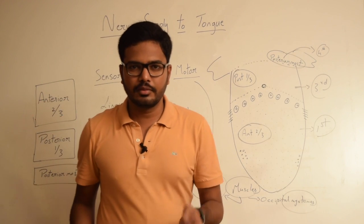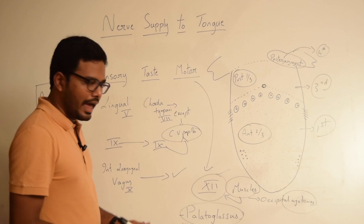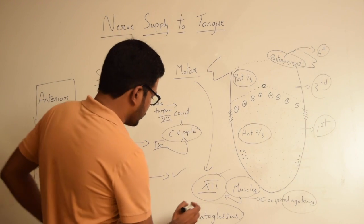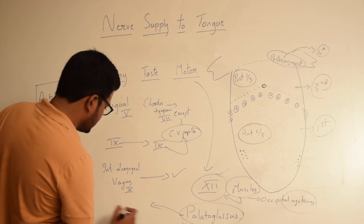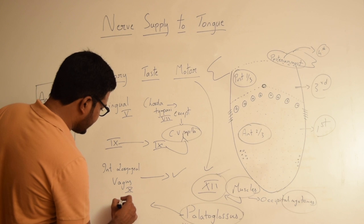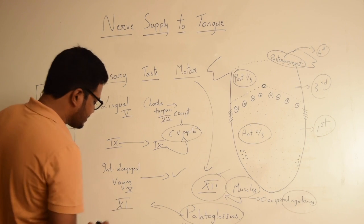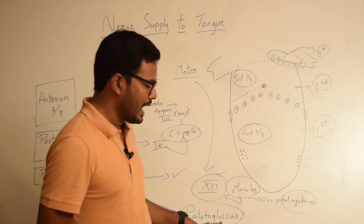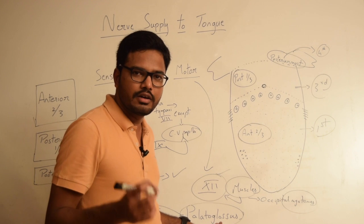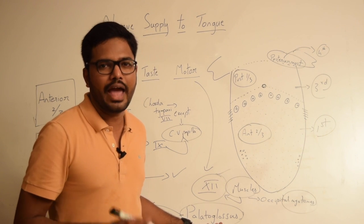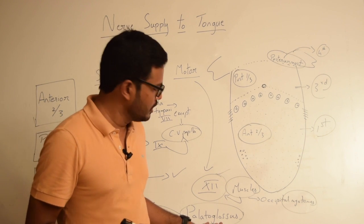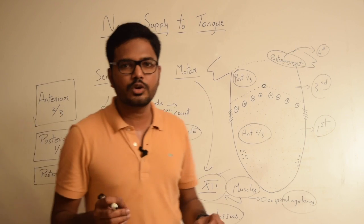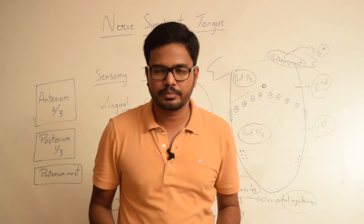However, we have an exception here. Except for one extrinsic muscle — the palatoglossus — whose innervation is mainly by the accessory nerve. The palatoglossus has its innervation from the cranial part of the accessory nerve because it has its origin from the mesoderm of the sixth branchial arch.